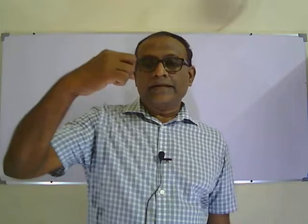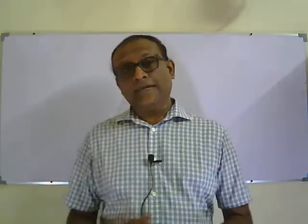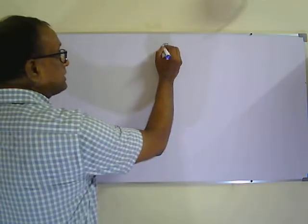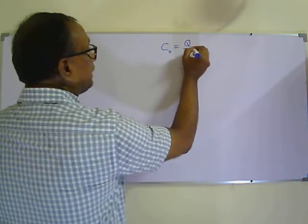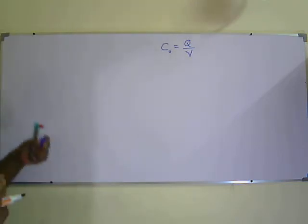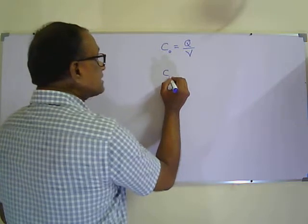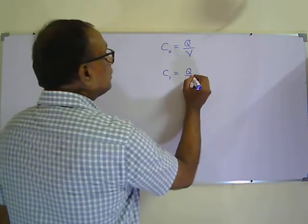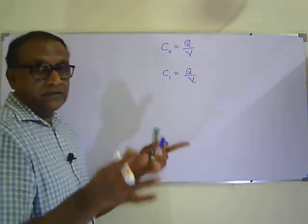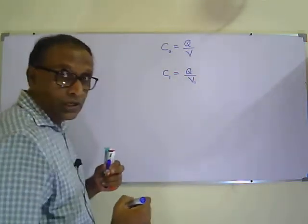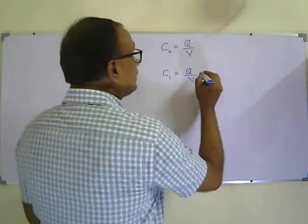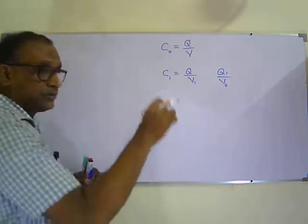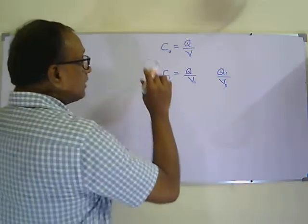So we know that when a dielectric material is inserted in the region between the parallel plate capacitor, the capacitance will increase. Without any dielectric material, let the capacitance be C naught, where C naught equals Q over V. After inserting the dielectric material, the capacitance becomes C1, which is certainly greater than C naught. C1 equals Q over V1 if the battery is removed, or Q1 over V if the battery remains connected. Either way, the capacitance after the dielectric material is inserted is greater.